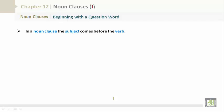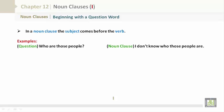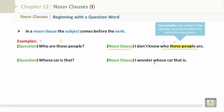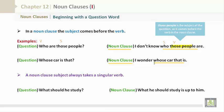Noun clauses beginning with a question word — in a noun clause, the subject comes before the verb. 'Who are those people?' — 'I don't know who those people are.' 'Those people' is the subject of the question, so it comes before the verb in the noun clause. 'Whose car is that?' — 'I wonder whose car that is.' A noun clause subject always takes a singular verb. Question: 'What should he study?' — Noun clause: 'What he should study is up to him.'